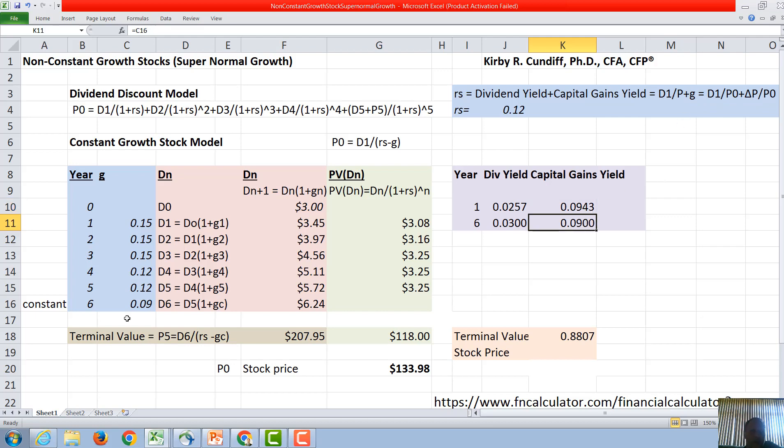So in our final year we can see that the capital gains yield becomes 9 percent. Once again the capital gains yield plus the dividend yield has to equal the required rate of return of 12. So we can take 12 minus 9 and get 3 percent for the dividend yield.